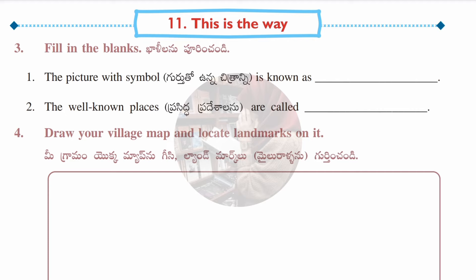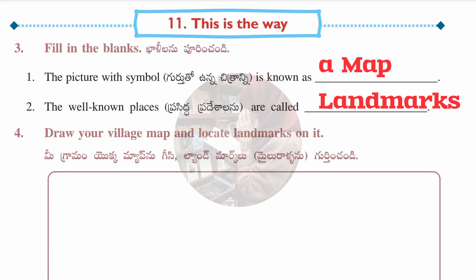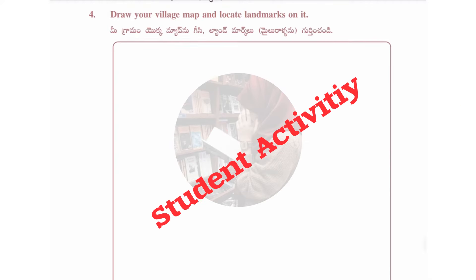Third section, fill in the blanks: The picture with symbols is known as a map. The well-known places are called landmarks. The fourth section is a student activity — draw your village map and locate a landmark on it. You need to draw the village map and mark the landmark on it yourself.